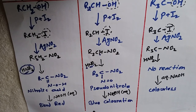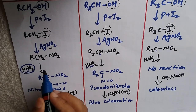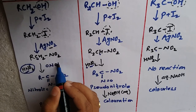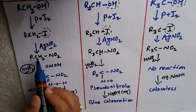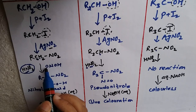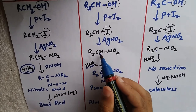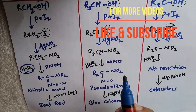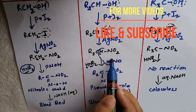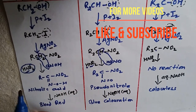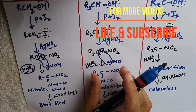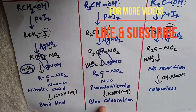This is the Victor Meyer method for distinguishing primary, secondary, and tertiary alcohols. As a trick: for primary, H₂O is removed using two hydrogens from the nitroalkane and one oxygen from HNO₂; for secondary, H₂O is removed using one hydrogen from each; and for tertiary, no H₂O can be removed, so there is no reaction. This is the basic trick for distinguishing using the Victor Meyer method.